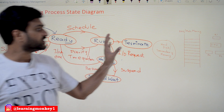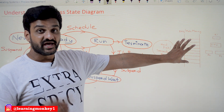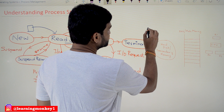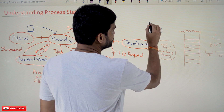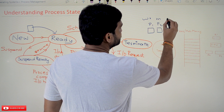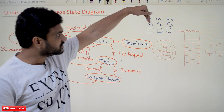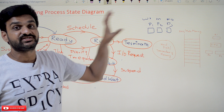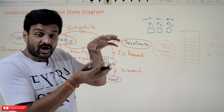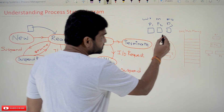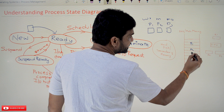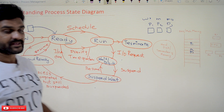Now we will try to understand the same concept using a real world example. We will assume three processes are willing to get executed: process P1 — a word document, process P2 — a music file, and process P3 — a movie download. The applications on the hard disk get converted into processes. All these new processes will get shifted onto the main memory — RAM — where P1, P2, and P3 are loaded.